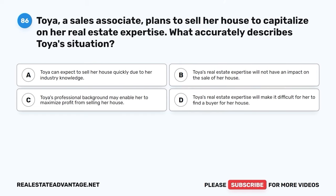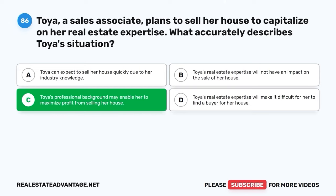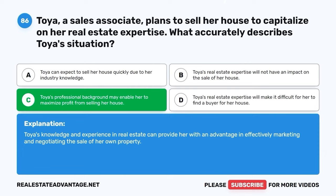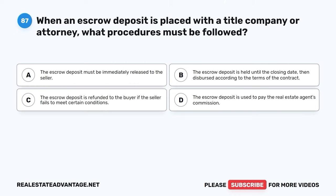Question 86. Toya, a sales associate, plans to sell her house to capitalize on her real estate expertise. What accurately describes Toya's situation? A. Toya can expect to sell her house quickly due to her industry knowledge. B. Toya's real estate expertise will not have an impact on the sale of her house. C. Toya's professional background may enable her to maximize profit from selling her house. D. Toya's real estate expertise will make it difficult for her to find a buyer for her house. The correct answer is C: Toya's professional background may enable her to maximize profit from selling her house. Toya's knowledge and experience in real estate can provide her with an advantage in effectively marketing and negotiating the sale of her own property.